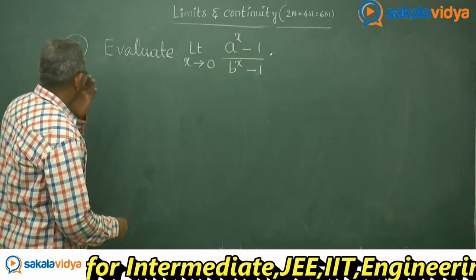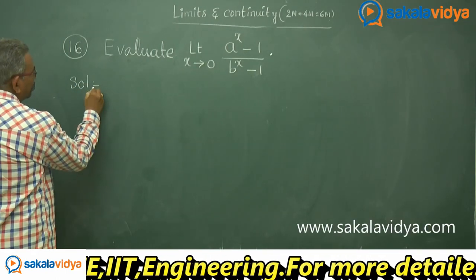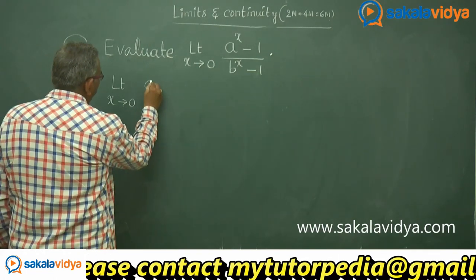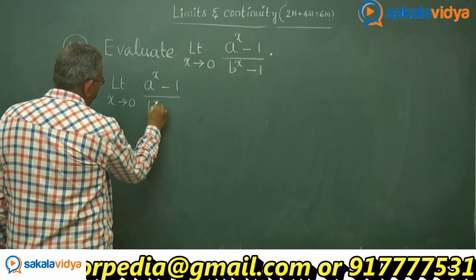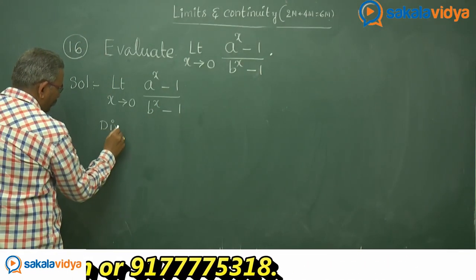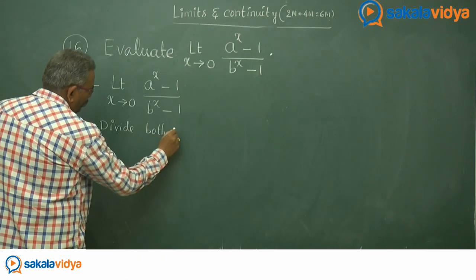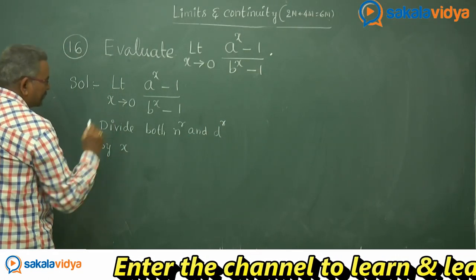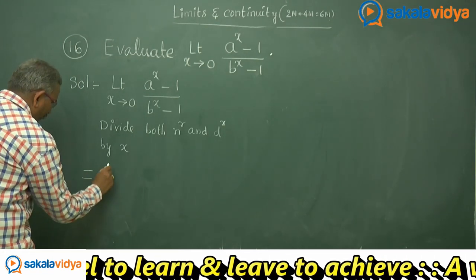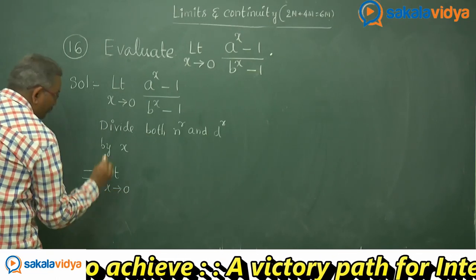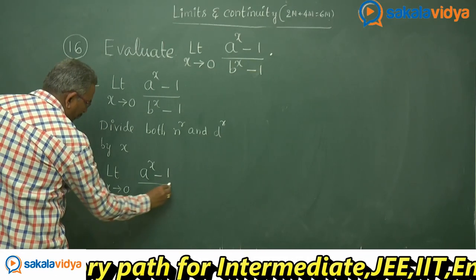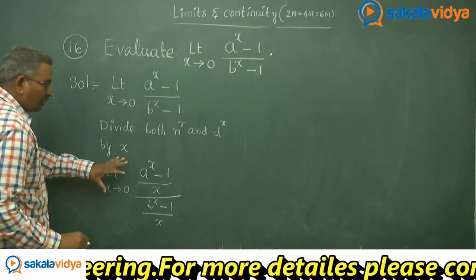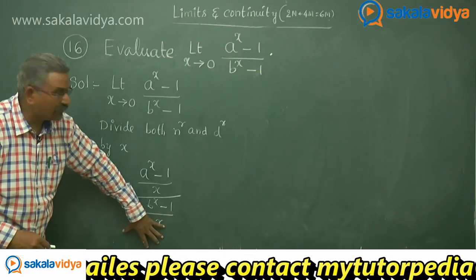So let us solve the problem formally. Solution: limit as x approaches 0 of (aˣ - 1)/(bˣ - 1). Divide both numerator and denominator by x. This can then be written as: limit as x approaches 0 of [(aˣ - 1)/x] divided by [(bˣ - 1)/x]. The limit can be applied to the numerator function as well as the denominator function separately.